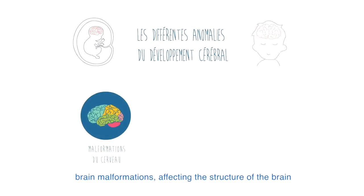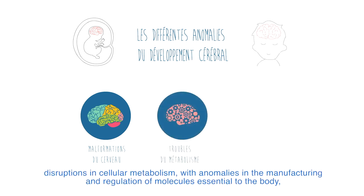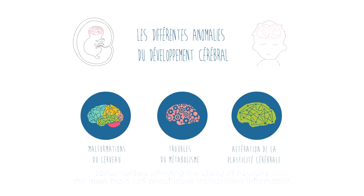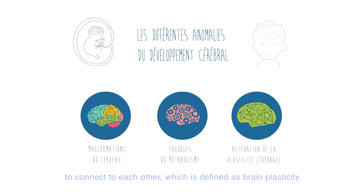Brain malformations, affecting the structure of the brain. Disruptions in cellular metabolism, with anomalies in the manufacturing and regulation of molecules essential to the body. Abnormalities affecting the ability of neurons — the main brain cell populations transporting information — to connect to each other, which is defined as brain plasticity.